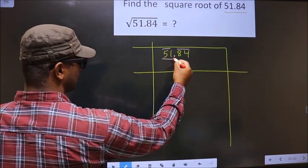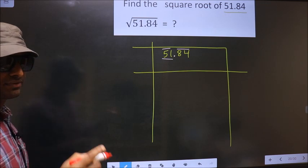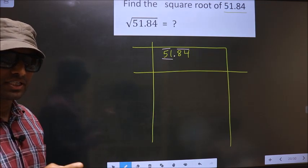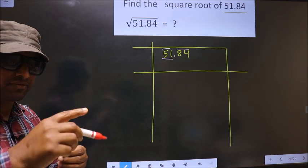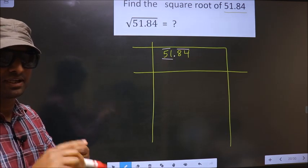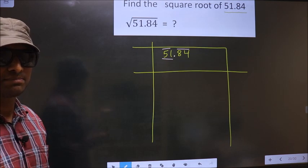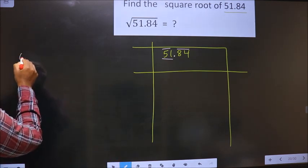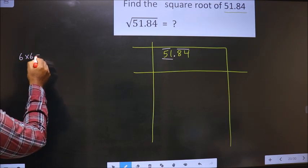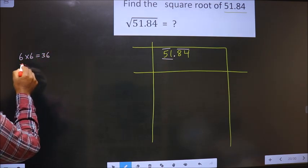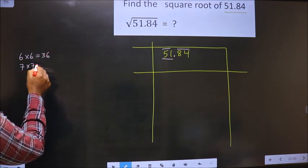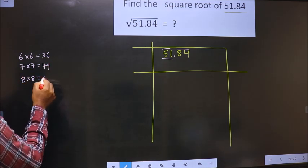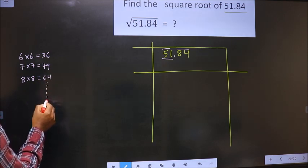Now here we have 51. 51 is not a perfect square. So now we should check 51 lies between which two perfect square numbers. And the perfect square numbers are these. That is 6 into 6, 36. 7 into 7, 49. 8 into 8, 64. And so on.